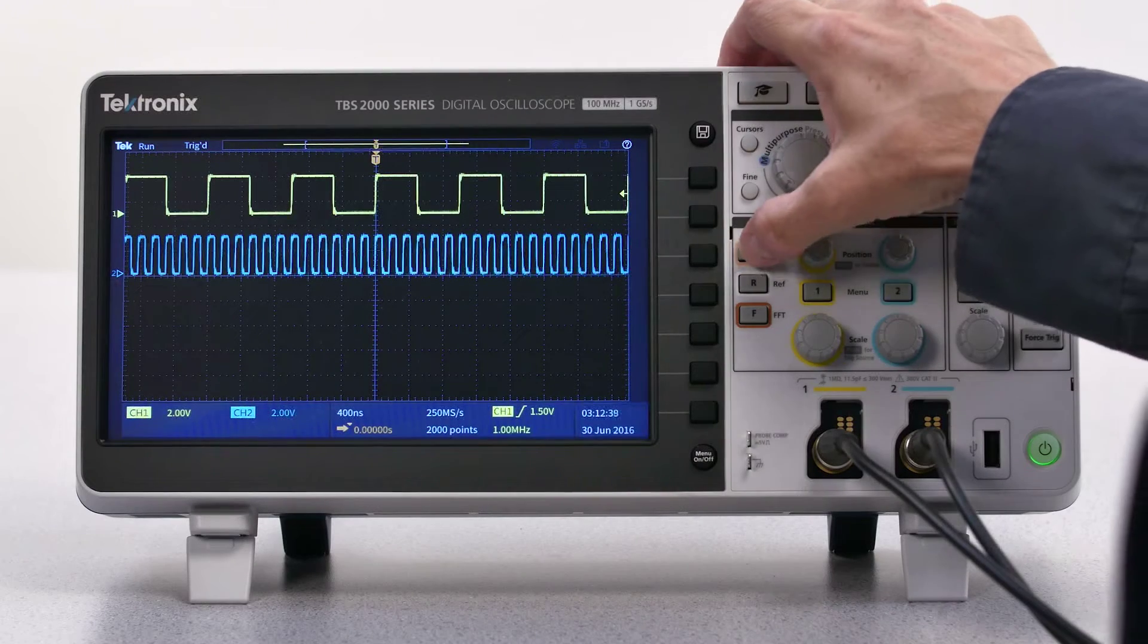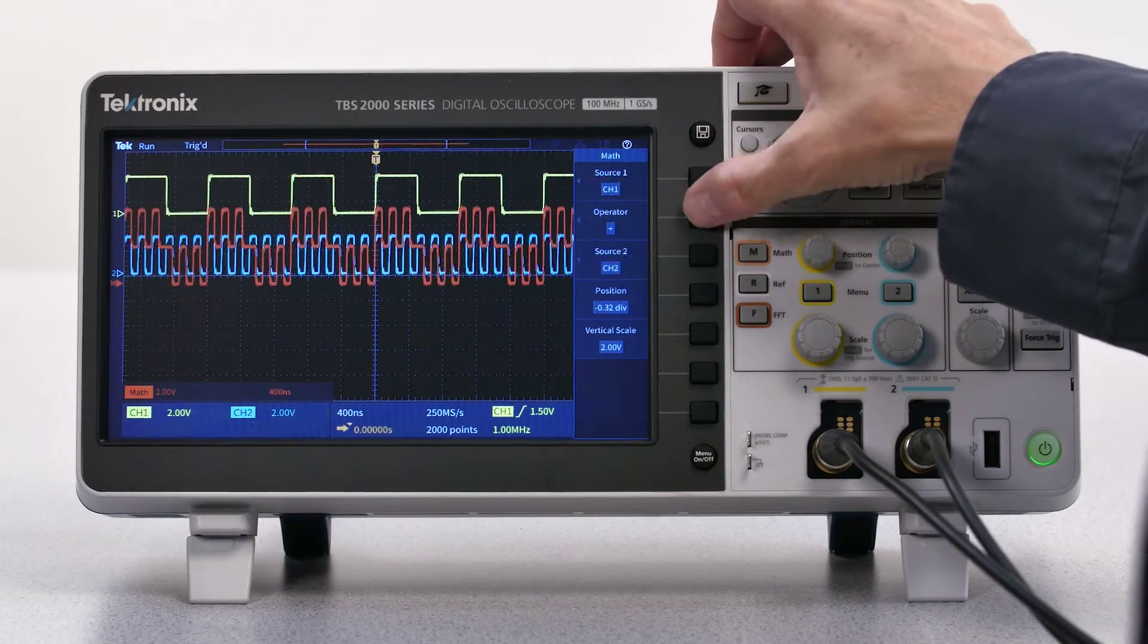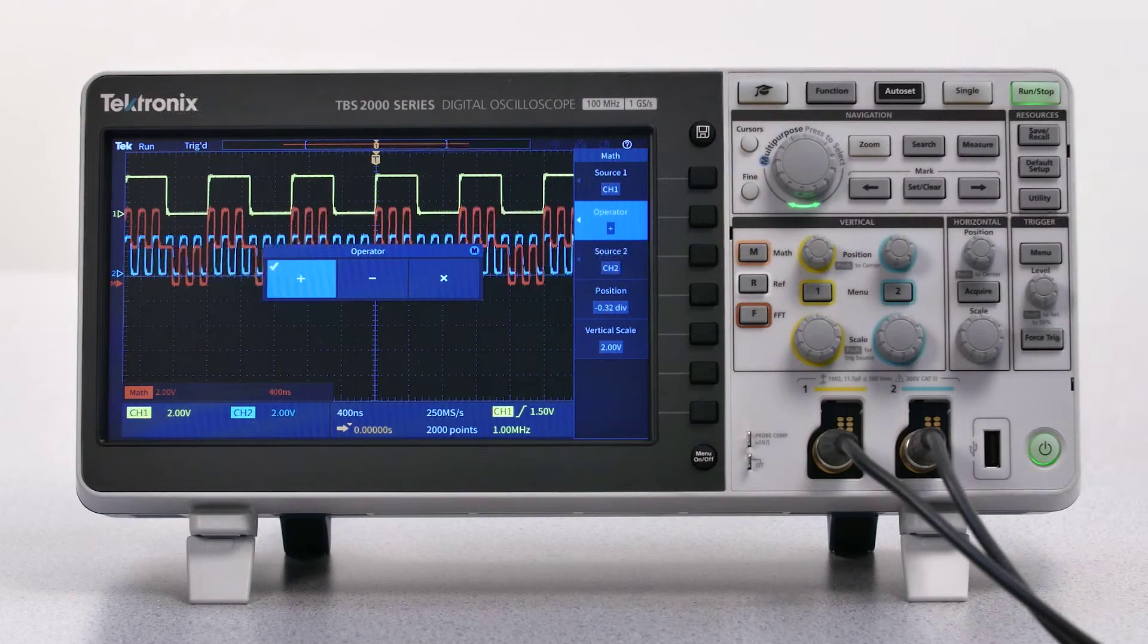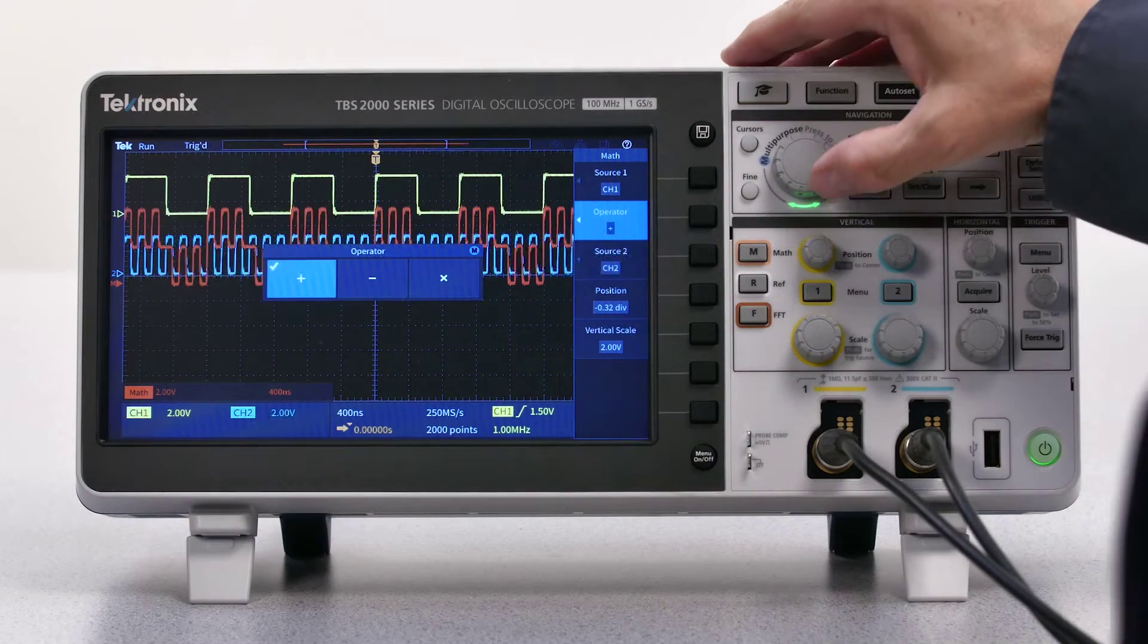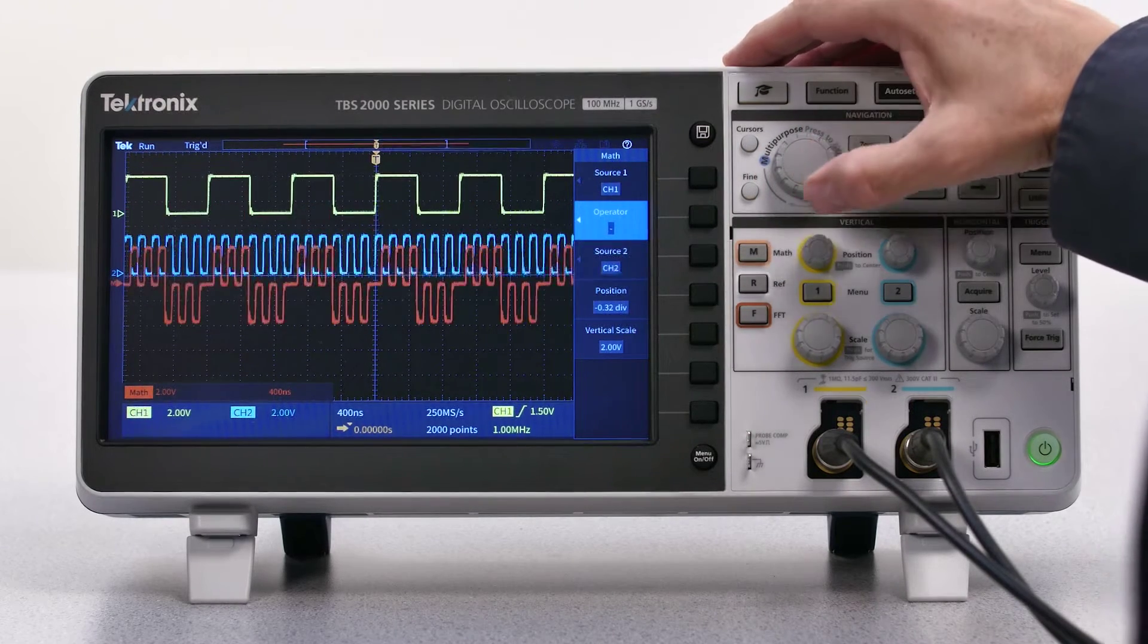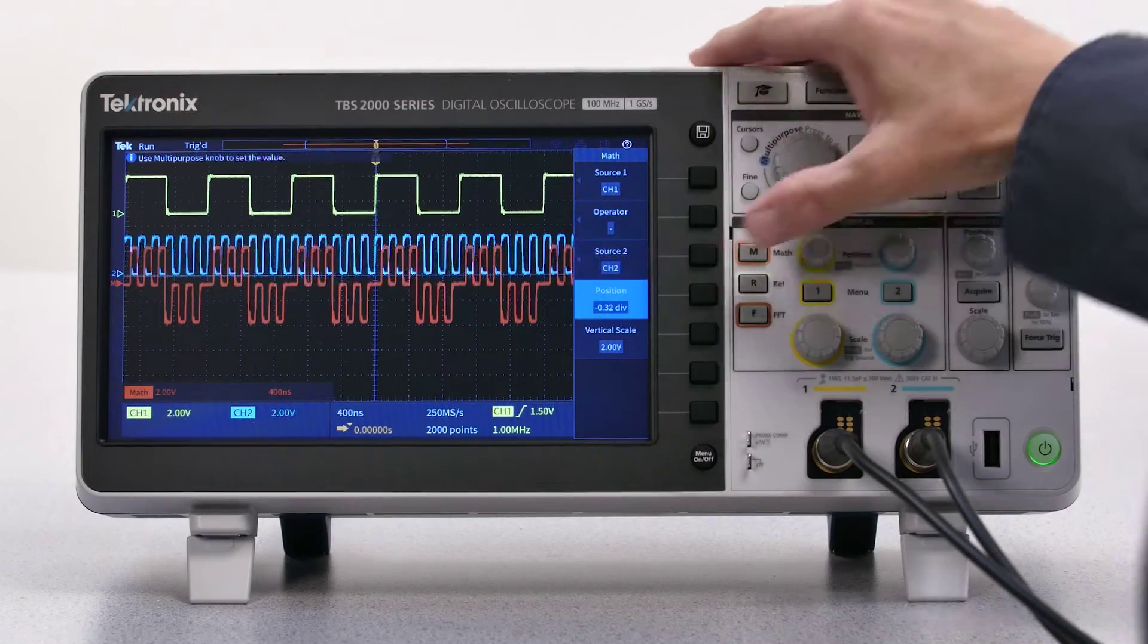With waveform math, you can subtract two channels to see a differential signal, or multiply a voltage and current signal to get a power waveform, or simply subtract one pulse signal from another.